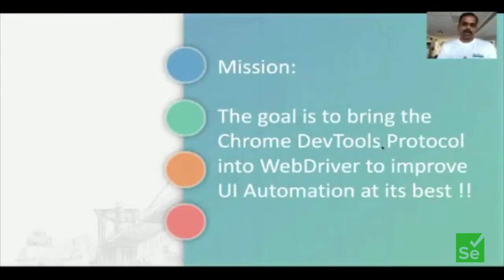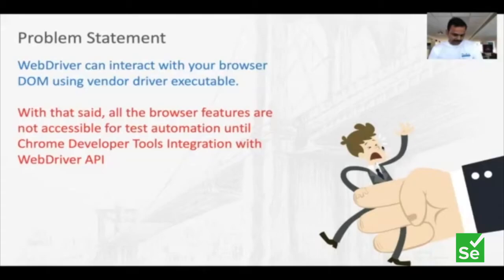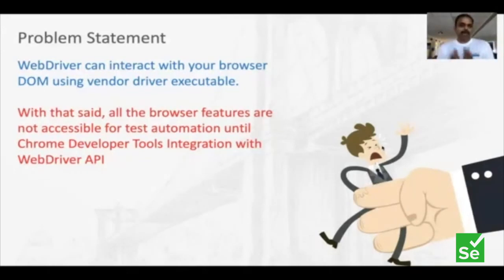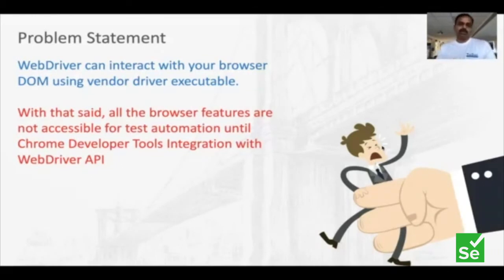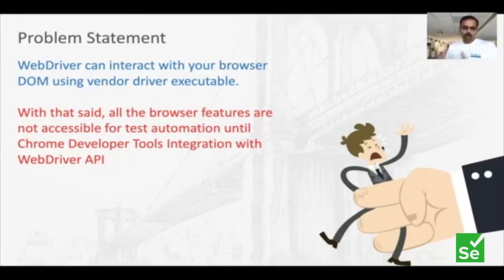What that means to you is the entire UI automation will become much more interesting, much beyond what we are really doing. For example, you might have been working on WebDriver for a very long time. The Selenium WebDriver can interact with the browser only with a DOM. So using your Chrome driver or Safari driver, you might talk to the browser, but some browser features cannot be accessible because the scope of the WebDriver is only related to the DOM element.